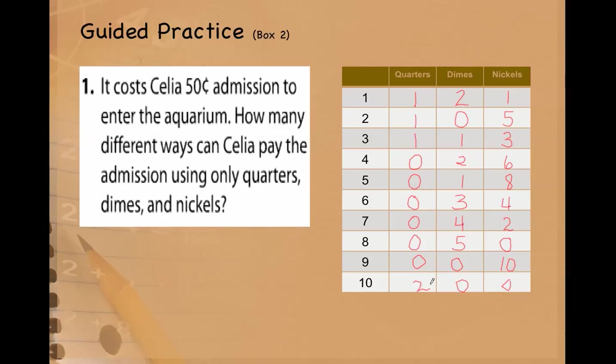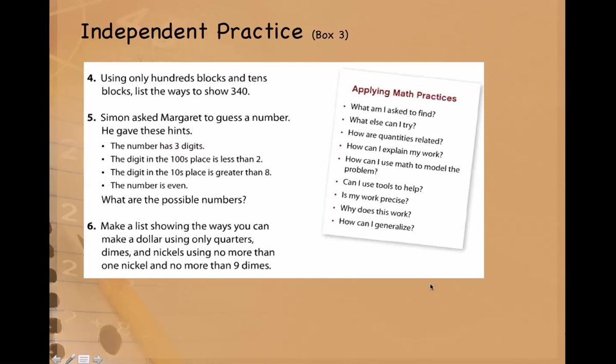So we've practiced using a diagram tree, an organized list, using a table and a multiplication sentence to come up with all the possible combinations for a set of data. Now it's your turn. Please work on numbers four, five, and six in box three of your homework sheet.